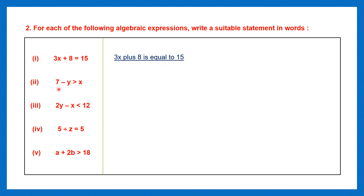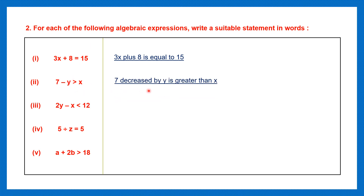Next one: 7 minus y is greater than x. Or you can say '7 decreased by y is greater than x.' There are different ways of saying it — you can simply say '7 minus y is greater than x.'